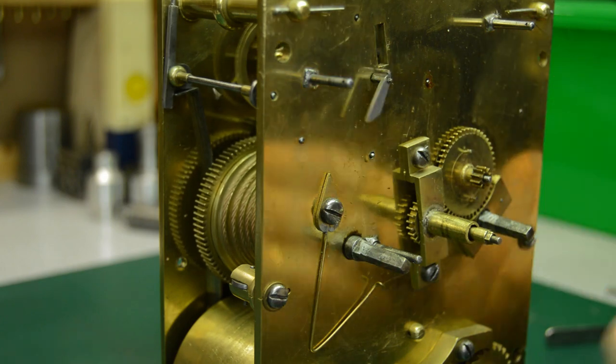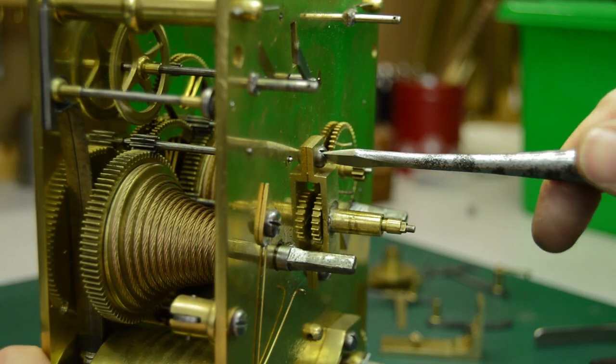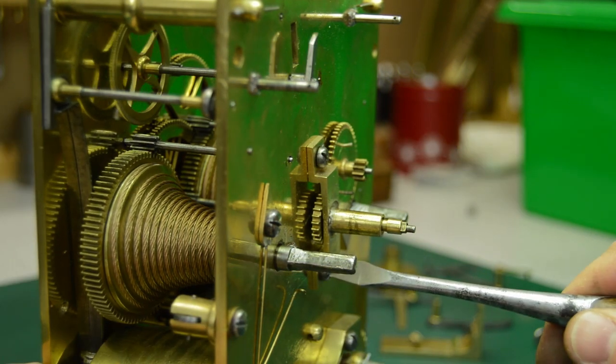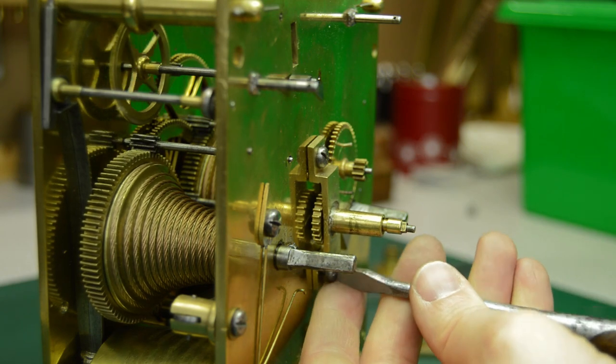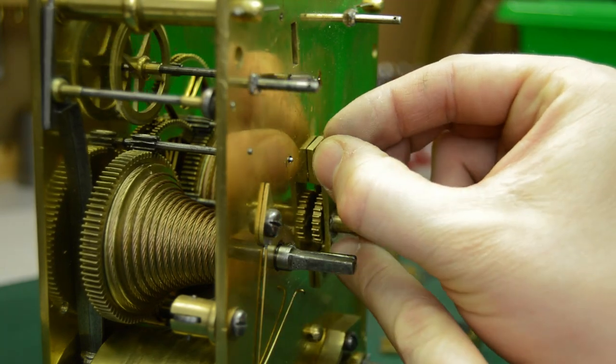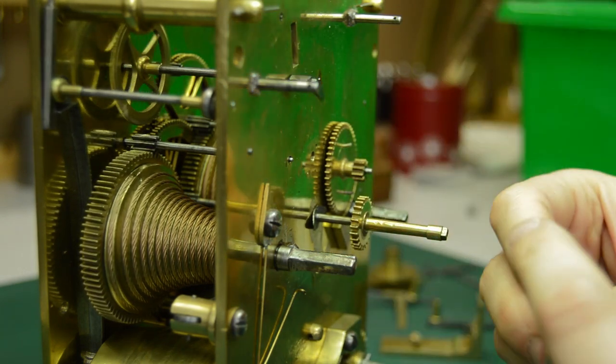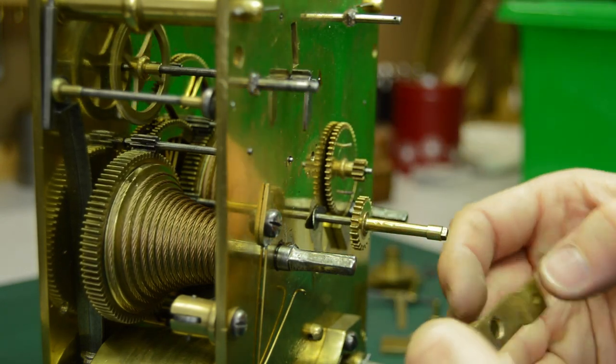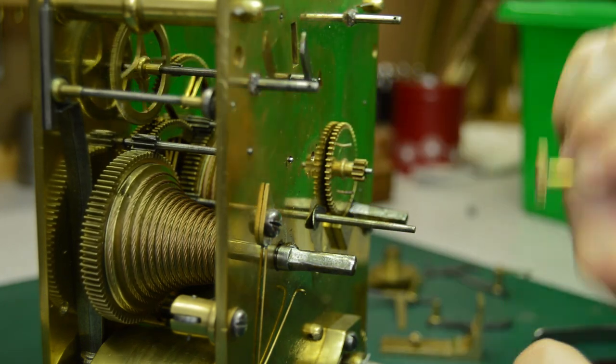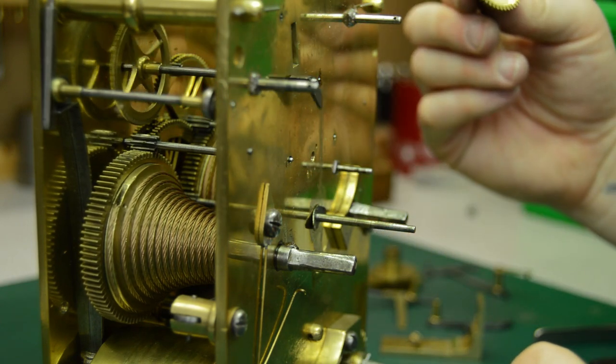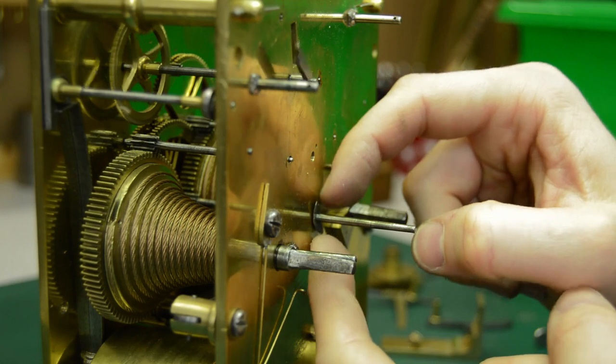Once the stripe work is off, I can start dismantling the motion work. First comes the hour wheel bridge and then the cannon or minute wheel from underneath it and the reverse minute wheel on its stub arbor next to it. The dished steel spring that's behind the cannon minute wheel is the clutch mechanism that provides friction to the hands. So this allows you to set the hands by overriding the friction of this spring.